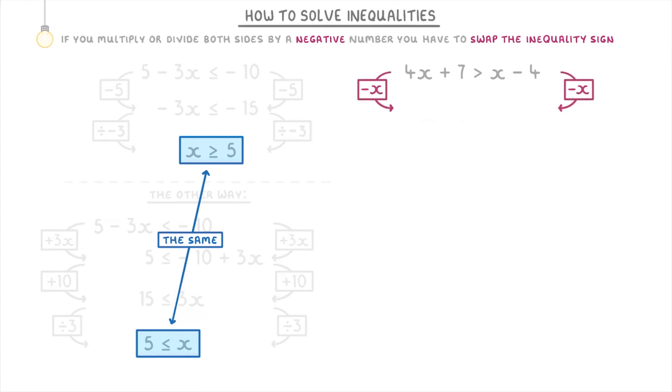The first thing you do is subtract x from both sides to get 3x + 7 is more than -4. Then you can subtract 7 from both sides to get 3x is more than -11. Finally, divide both sides by 3 to get x is more than -11/3. We can leave our answer like that because we can't simplify -11/3.